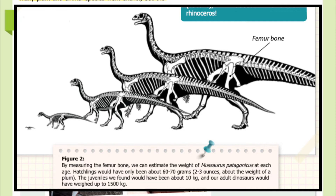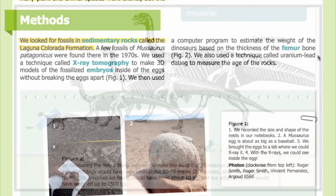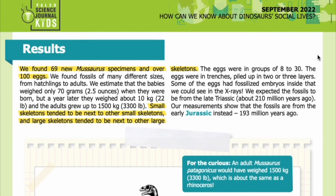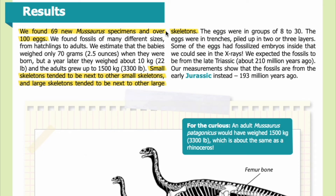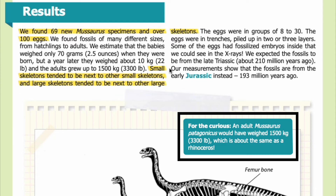In the image you can see five differently aged dinosaurs, with the oldest toward the top right and the hatchling toward the bottom left. The femur bone in the back leg is identified in the adult dinosaur. Results: We found 69 new Mussaurus specimens and over 100 eggs — fossils of many different sizes from hatchlings to adults. Babies weighed only 70 grams when born, but a year later weighed about 10 kilograms or 22 pounds. Adults grew up to 1,500 kilograms or 3,300 pounds — about the same as a rhinoceros.